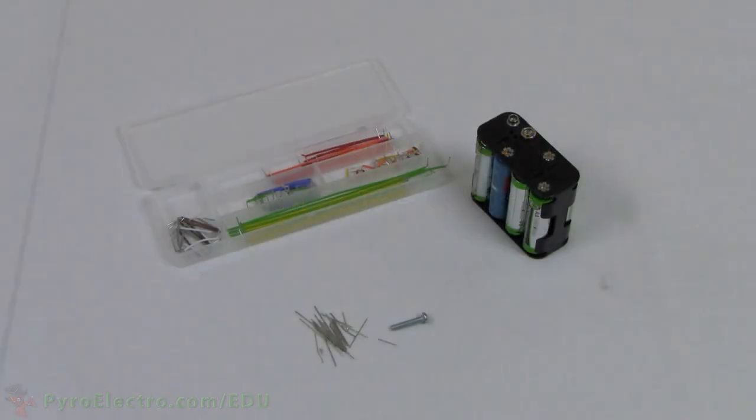Since the inductor stores electrical charge in the form of a magnetic field, we should be able to build an electromagnet with only a few components. Let's experiment and try to build an electromagnet.